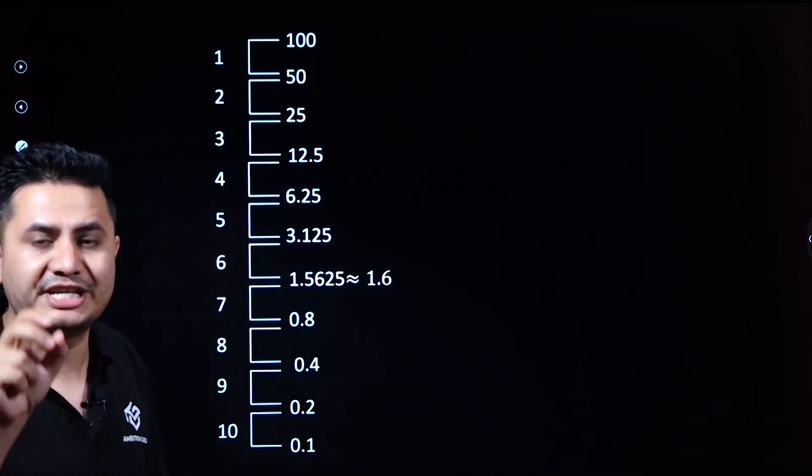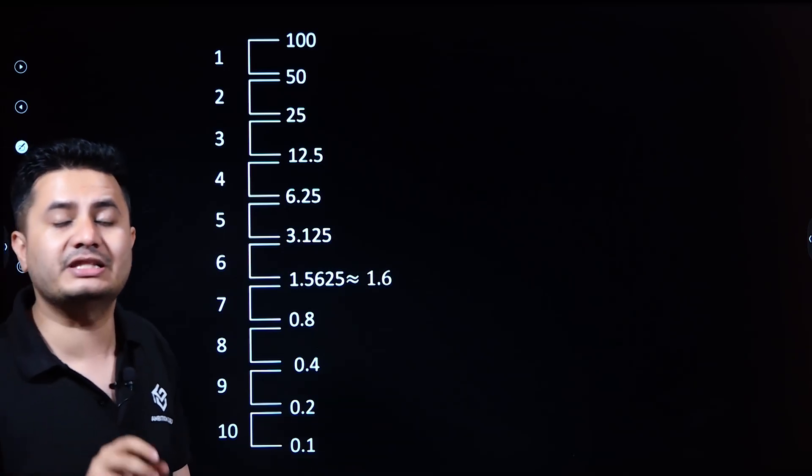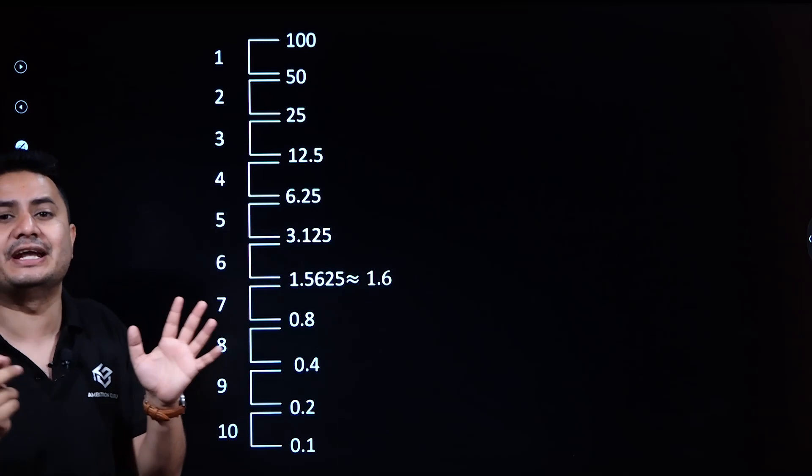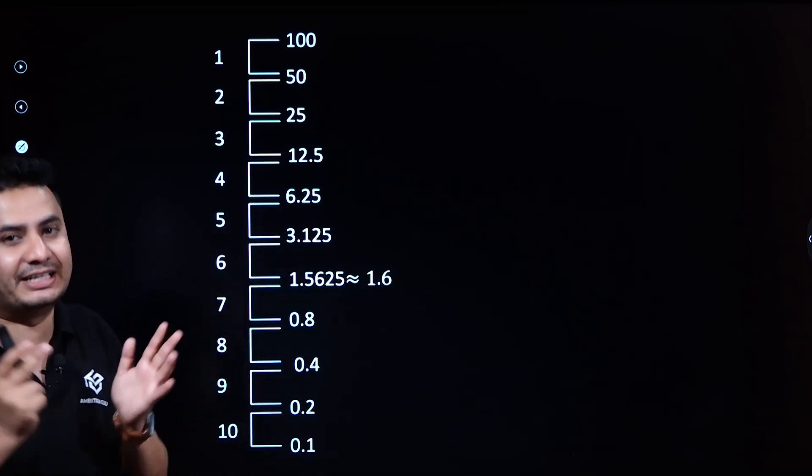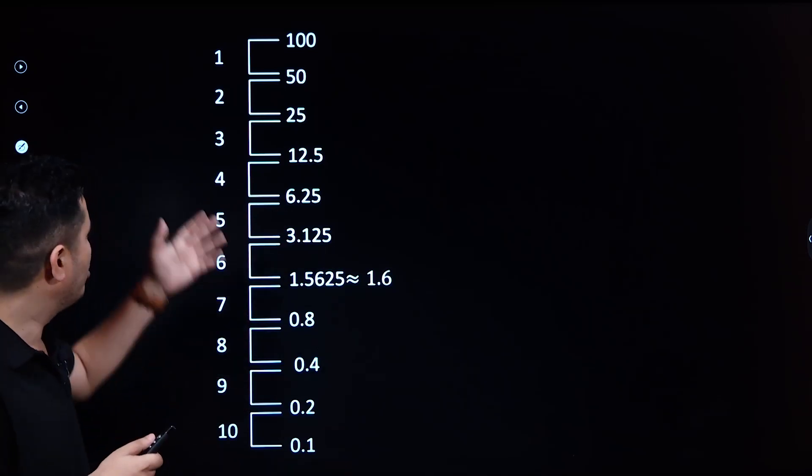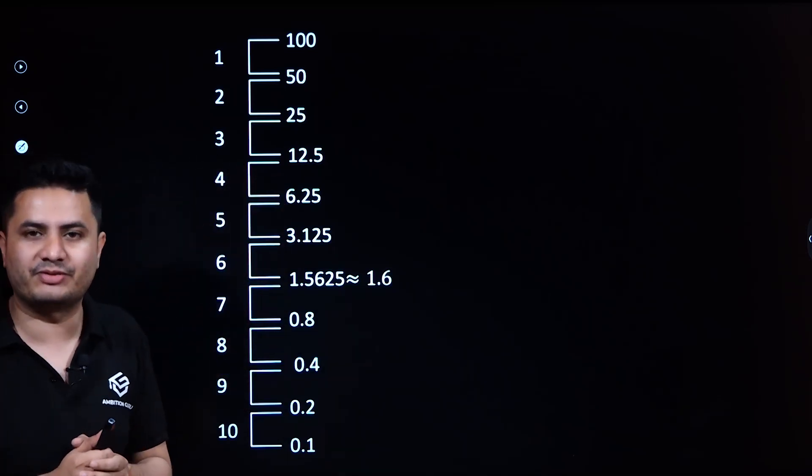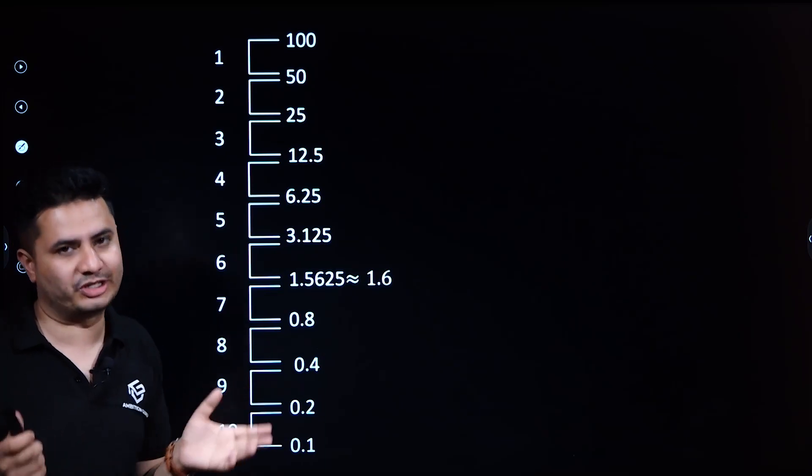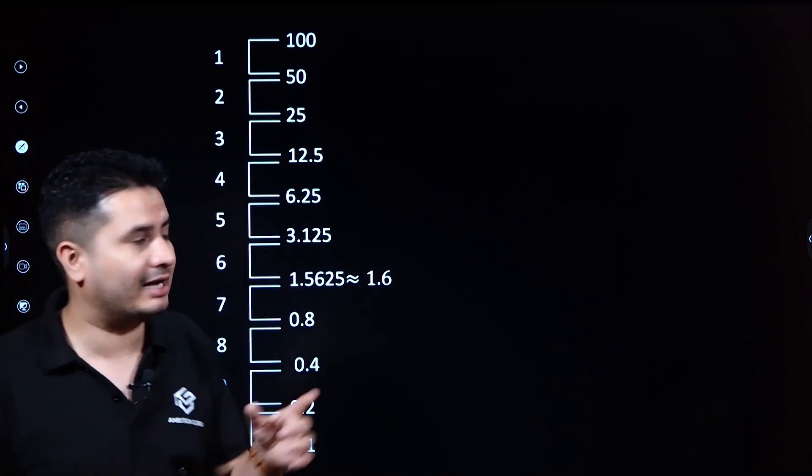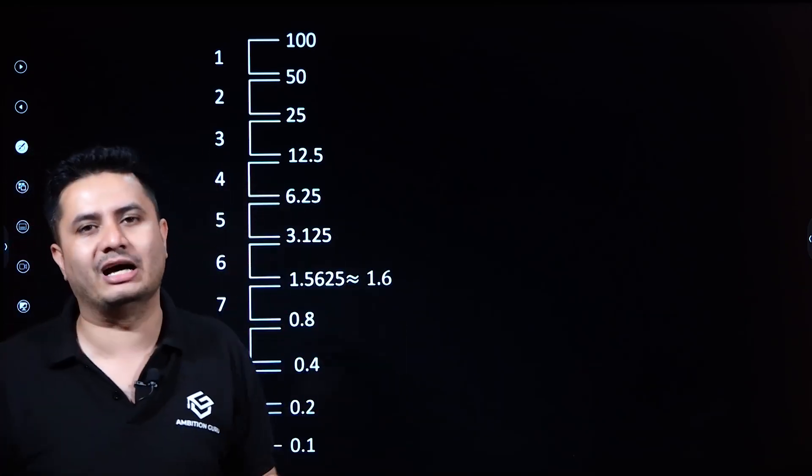So 10 half-life periods' time is required. Using this diagrammatic approach, you can calculate without any formula how many half-life periods are needed for any given fraction.